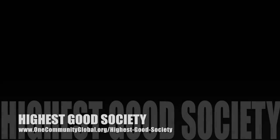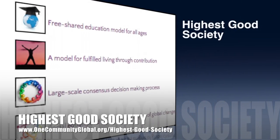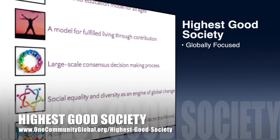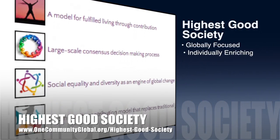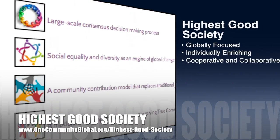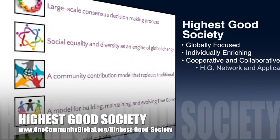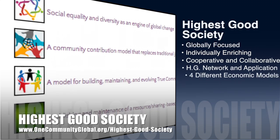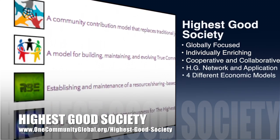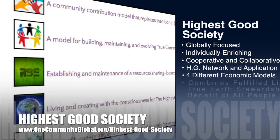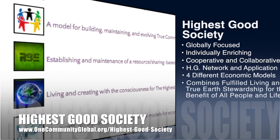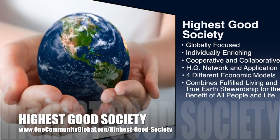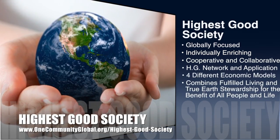One Community's approach to Highest Good Society is globally focused, individually enriching, cooperative and collaborative, includes a Highest Good network and application, four different economic models, and combines fulfilled living and true earth stewardship for the benefit of all people and all life on this planet.